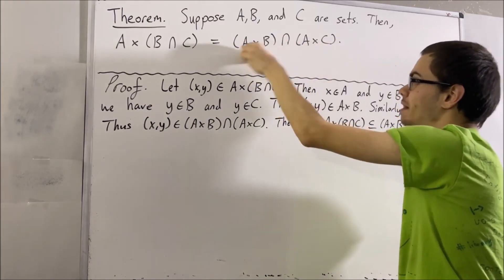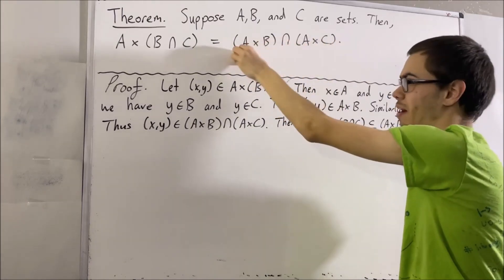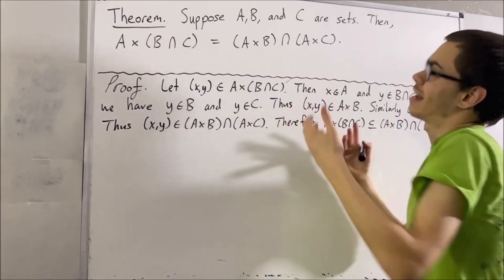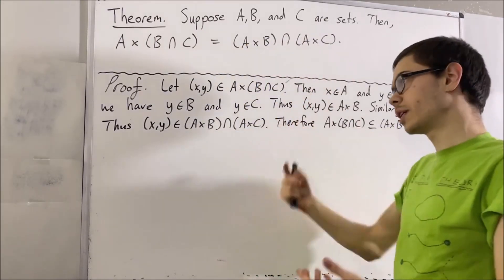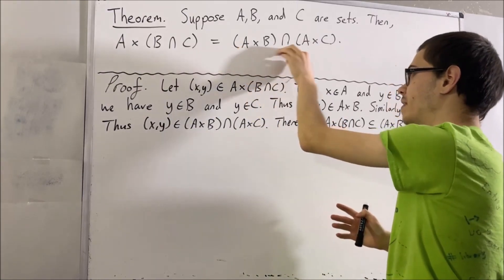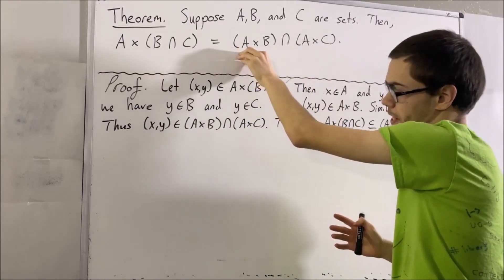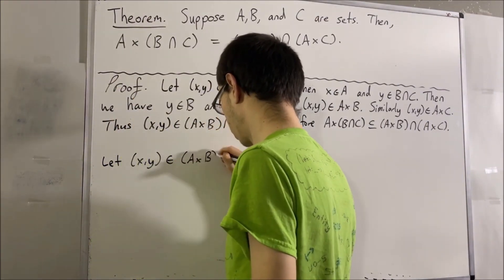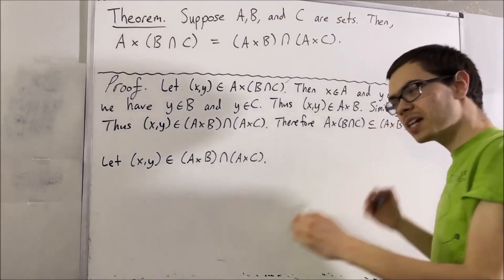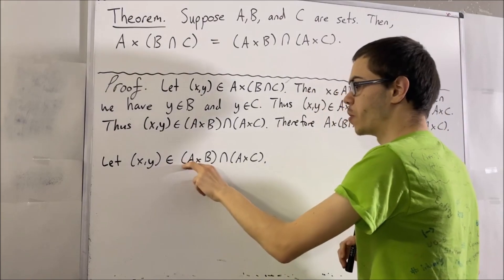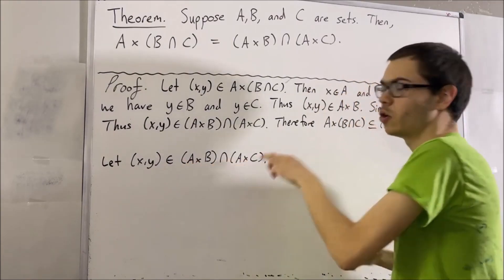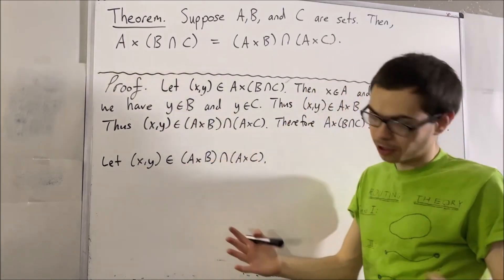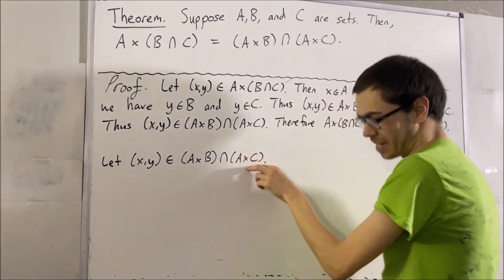Therefore, every element in this entire set must be an ordered pair. So, when we consider an arbitrary element of this set, that element is going to be an ordered pair — say, X comma Y. Now, because X comma Y is an element of both this set and this set, we can write that X comma Y is an element of A times B and also that X comma Y is an element of A times C.